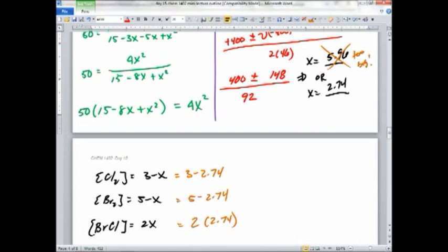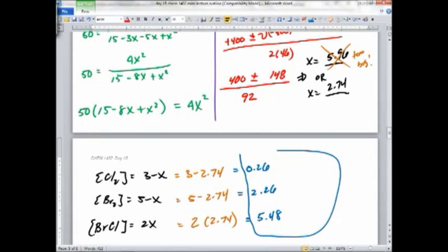So, what do you get? 0.26. Thank you. What's that one? 5.48. Thank you. Okay. You go through all that work, get all those answers, and Smith still takes points off. You don't have the big M. You got to have units on your answers. You can write moles over liters, but the big M is faster.